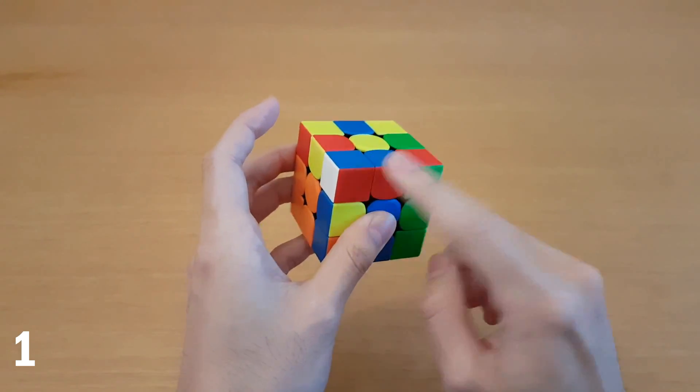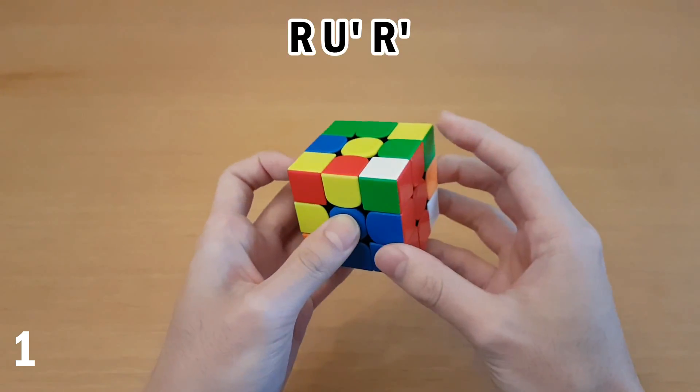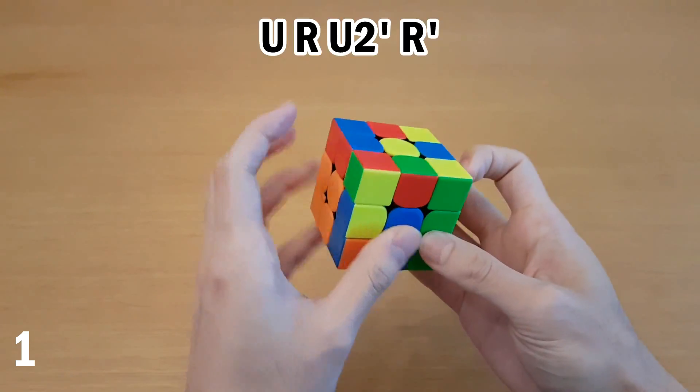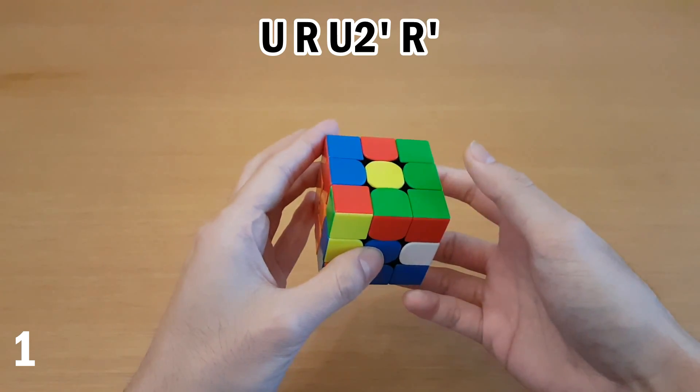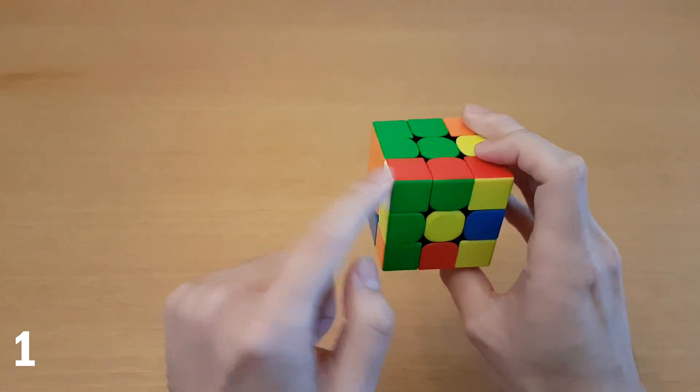The idea here is I have two ways of inserting this, either R U prime R prime, which leaves me with this case, or I can do U and insert it with a double move, R U2 R prime, and that gives me a much better case.